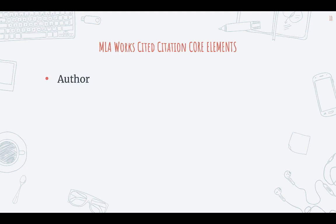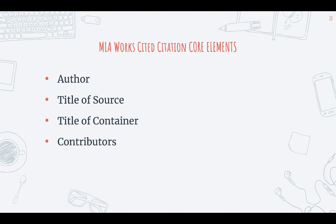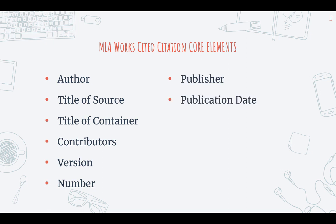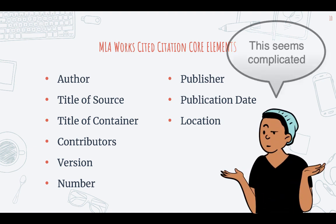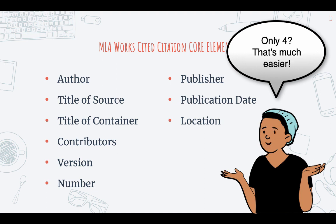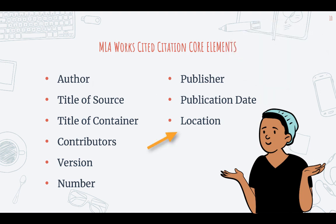These elements are: author, title of source, title of container, contributors, version, number, publisher, publication date, and location. You don't need to memorize all this, and again, you're not going to use all these elements for every citation. In fact, most citations you create are only going to have about four of these elements — the ones that answer the four W's, like the author, title of source, publication date, and location.